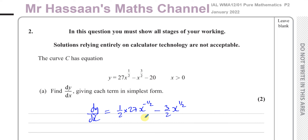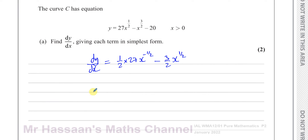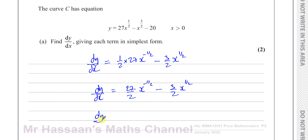Simplifying, dy/dx equals 27 over 2 times x to the power of negative a half, minus 3 over 2 times x to the power of a half. You could also write the first term with x to the power of a half in the denominator: 27 over 2x to the power of positive a half, minus 3 over 2 with x to the power of a half on the numerator.